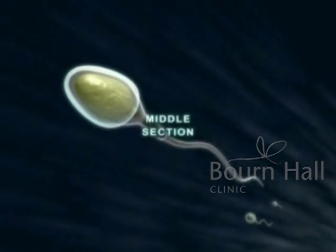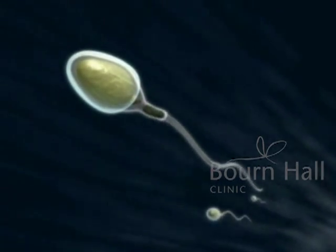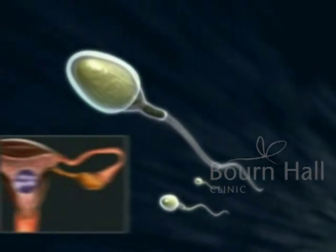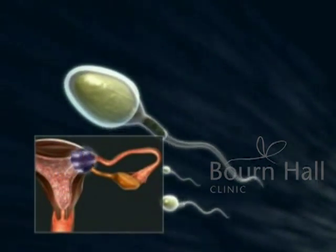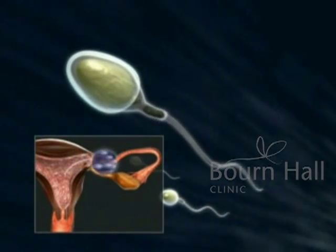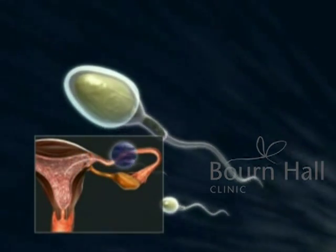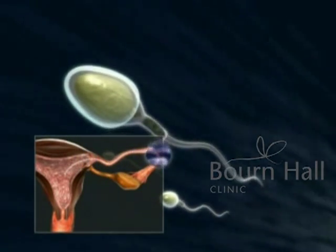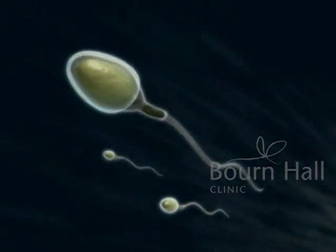In the middle section, energy is produced that is used to move the tail. The sperm are propelled from the base of the vagina to the fallopian tube where the oocyte will be fertilized.